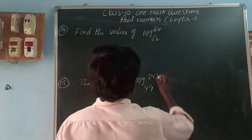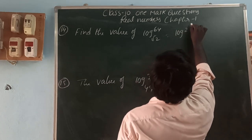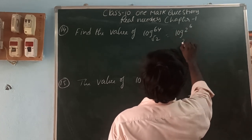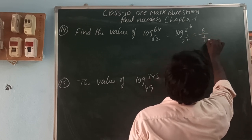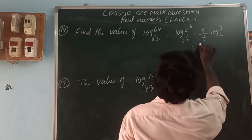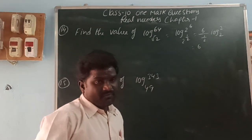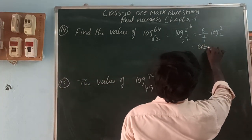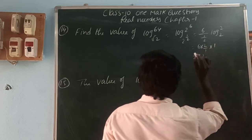Find the value of log 64 base √2. Now 64 = 2⁶ and √2 = 2^(1/2). So this is log(2⁶) base 2^(1/2) = 6/(1/2) · log 2 base 2 = 6 × 2 = 12.